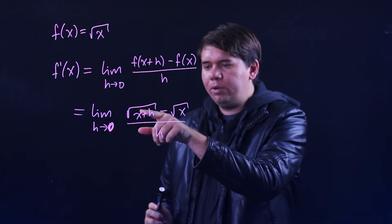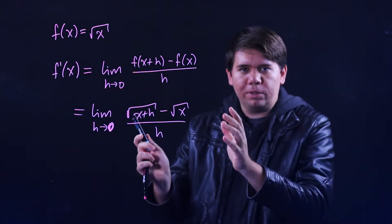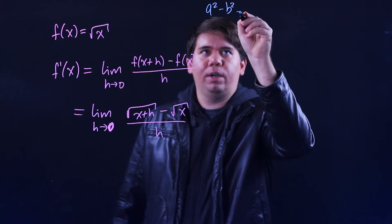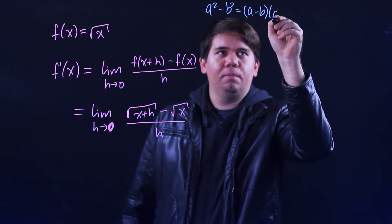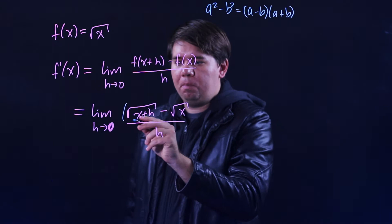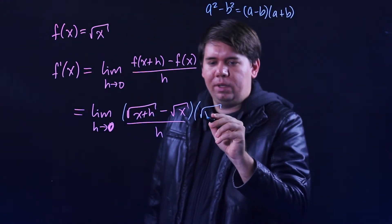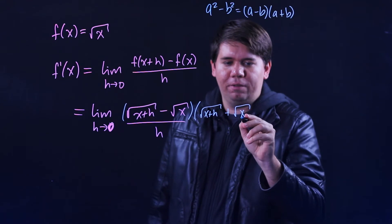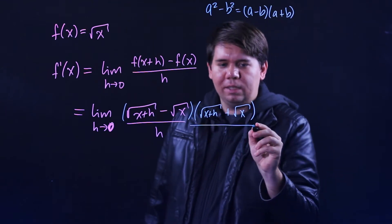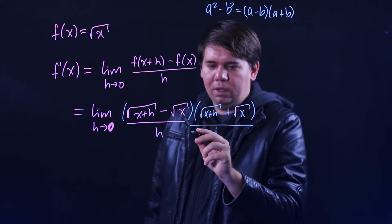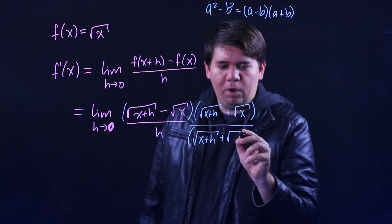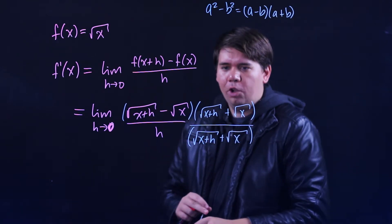As we have a square root of something minus the square root of something, we want to square those terms to get rid of it. We're going to use the algebraic fact that a squared minus b squared is just a minus b times a plus b. To get rid of these square roots we need to multiply the top by the square root of x plus h plus the square root of x. But since it's a fraction, we multiply the top and bottom by the same thing.